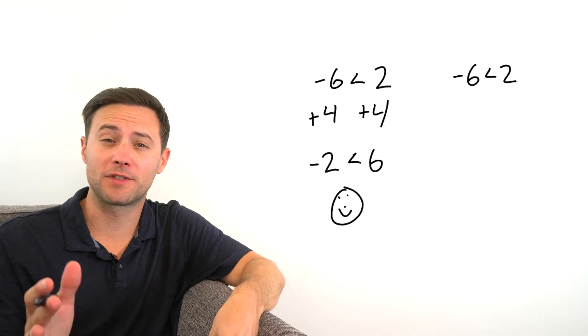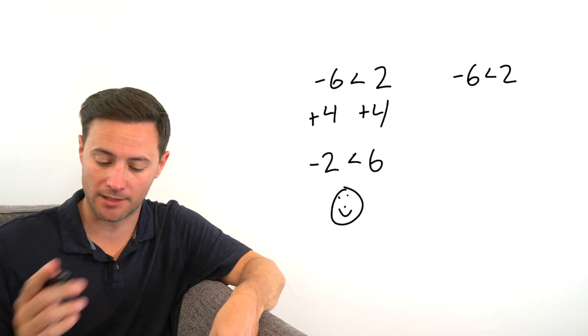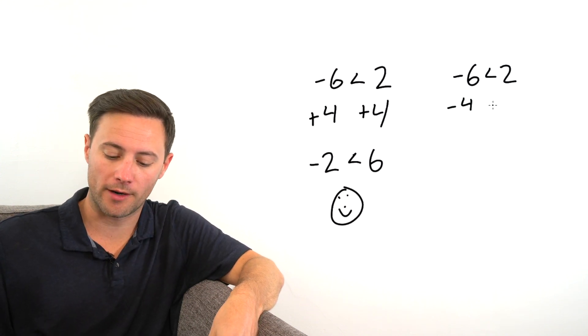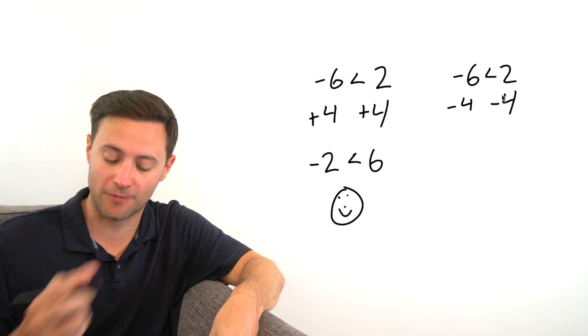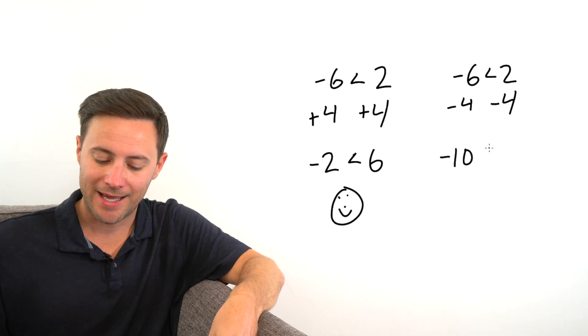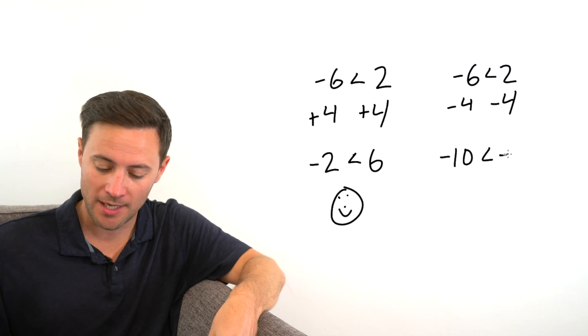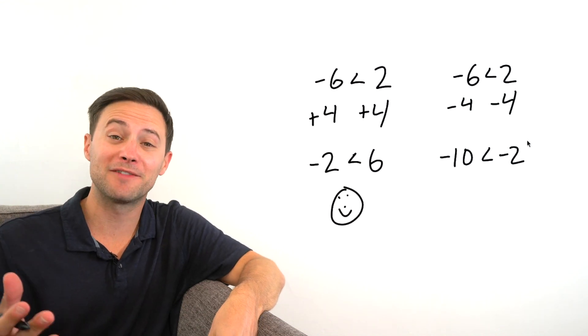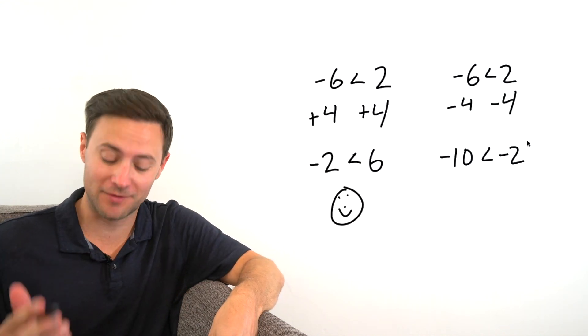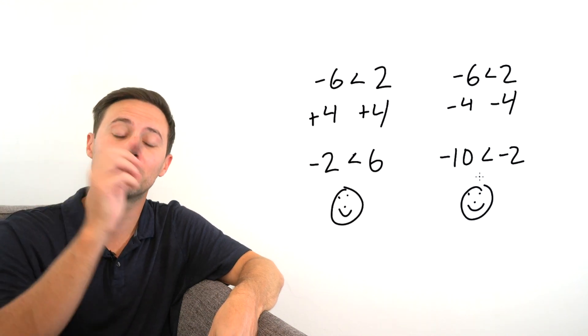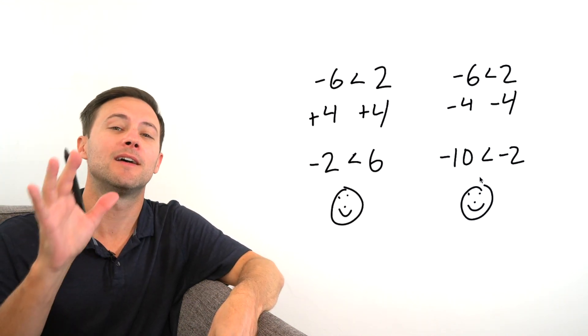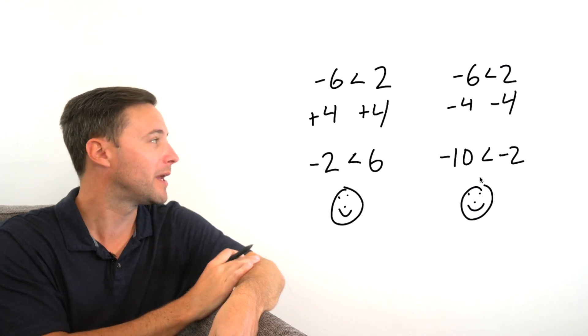So adding the same thing to both sides works. Let's check subtraction. What if we subtract four from both sides? Well, negative six minus four would give me negative ten. Is that still less than two minus four, which gives me negative two? Negative ten is still less than negative two, which means yes, if we subtract the same thing from both sides, the inequality will also remain true.